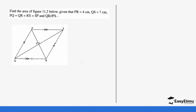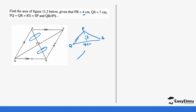Looking at the rhombus, you can take the upper portion as one triangle and the lower as another. The upper triangle has vertices P, S, and Q with a perpendicular bisector. From the question, QS is 7 centimeters and PR is 4 centimeters, so half of PR is 2 centimeters. The lower triangle RQS also has a base of 7 centimeters and a height of 2 centimeters.